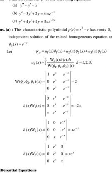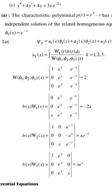ψ₃(x) = e^(-x). Let ψ_p = u₁(x)ψ₁(x) + u₂(x)ψ₂(x) + u₃(x)ψ₃(x). Then u_k(x) = integral of [W_k(t) · b(t)] dt divided by W(ψ₁, ψ₂, ψ₃)(t), for k = 1, 2, 3.